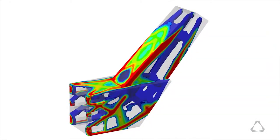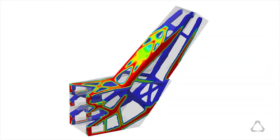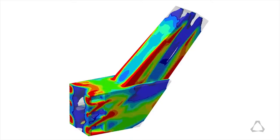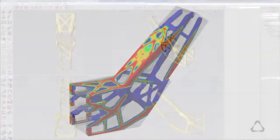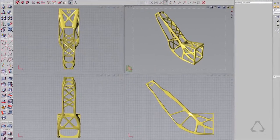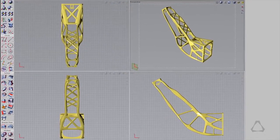OptiStruct helped us to perform the topology optimization and to understand the load path, how the loads would distribute within the given volume of the bracket. We also used Evolve for the realization of the design.